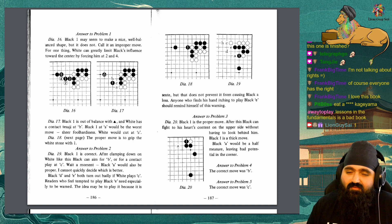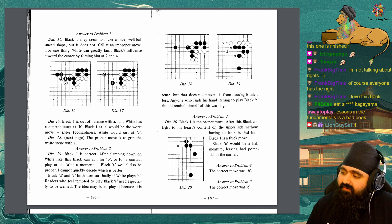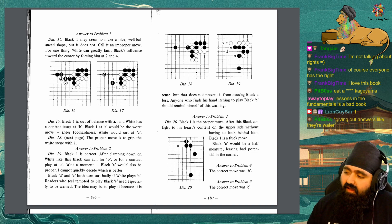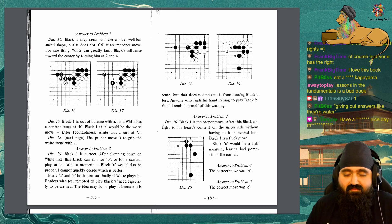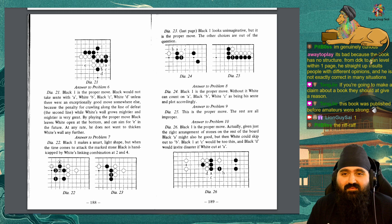Answer to problem 3. Diagram 20. Black 1 is the proper move. After this, Black can fight to his heart's content on the upper side without having to look behind him. Black 1 is a thick move. Black A would be half a measure, leaving a bad potential in the corner. Answer to problem 4. The correct move was B. Answer to problem 5. The correct move was C. Answer to problem 6. Diagram 21. Black 1 is the proper move. Black would not take sente with A, White B, Black C, White D, unless there were an exceptionally good move somewhere else, because the penalty for crawling along the line of defeat while White's wall grows mightier and mightier is very great. By playing the proper move, Black leaves White open at the bottom and can aim for E in the future. At any rate, he does not want to thicken White's wall any further.